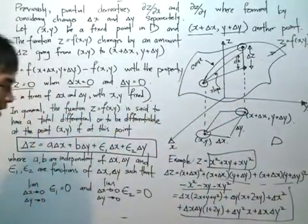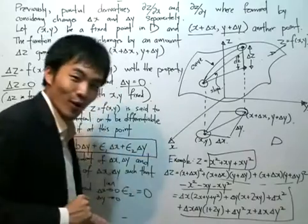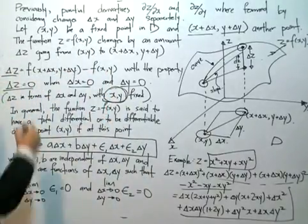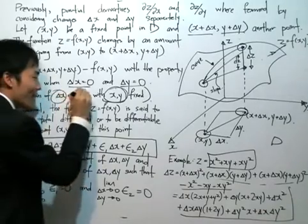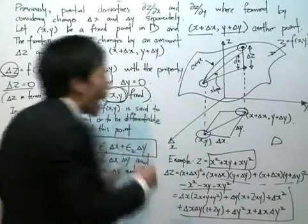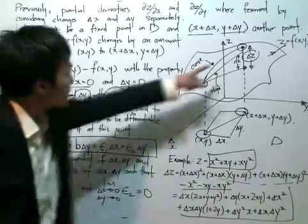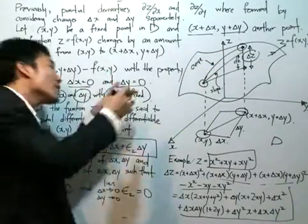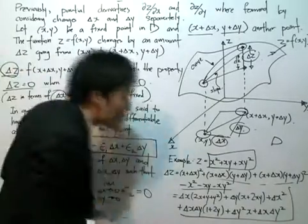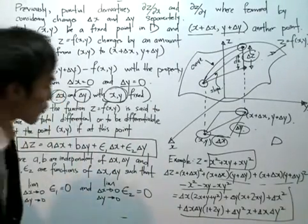Speaking precisely about advanced differential calculus: when x and y are fixed, the function delta z is now expressed in terms of delta x and delta y. Our main goal is to find a way to describe delta z. Delta z is a variable that changes when we change delta x and delta y. We're describing delta z — the change in the z value — in terms of delta x and delta y, with x and y held fixed at our starting point.